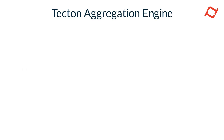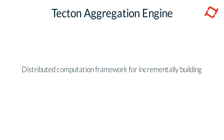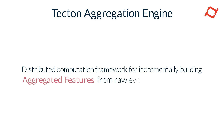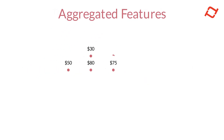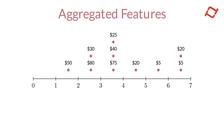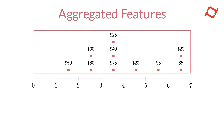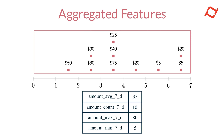Tekton's aggregation engine is a distributed computation framework for incrementally building aggregated features from raw event data. Aggregation features are derived by calculating metrics over a window of time, such as averages, counts, and max-min values.